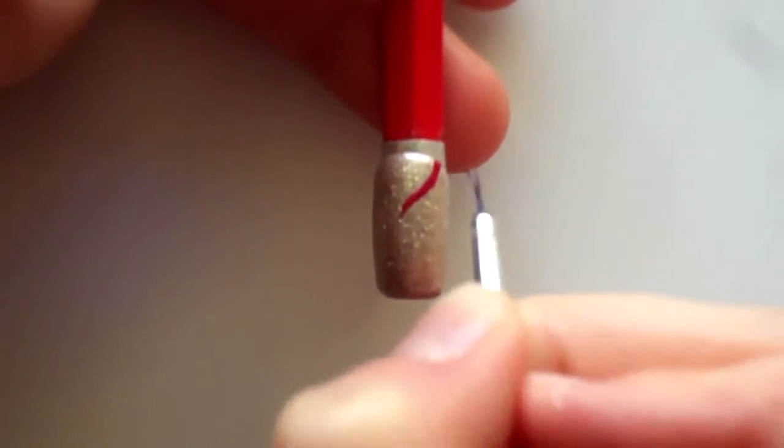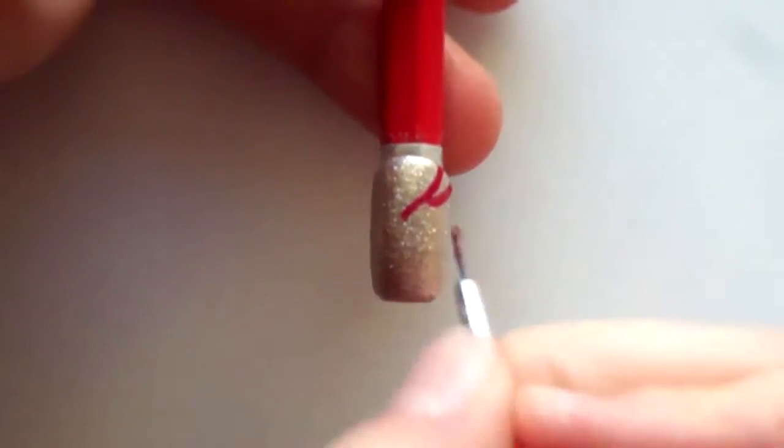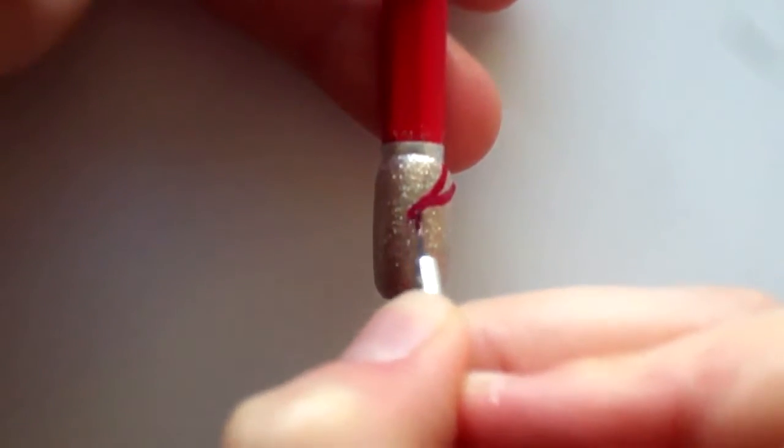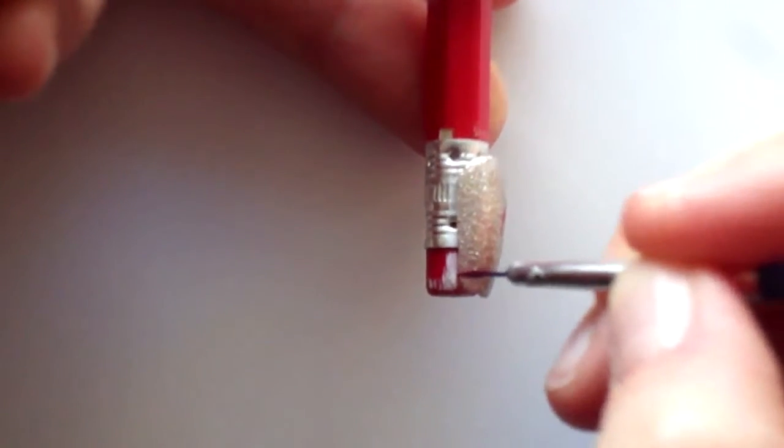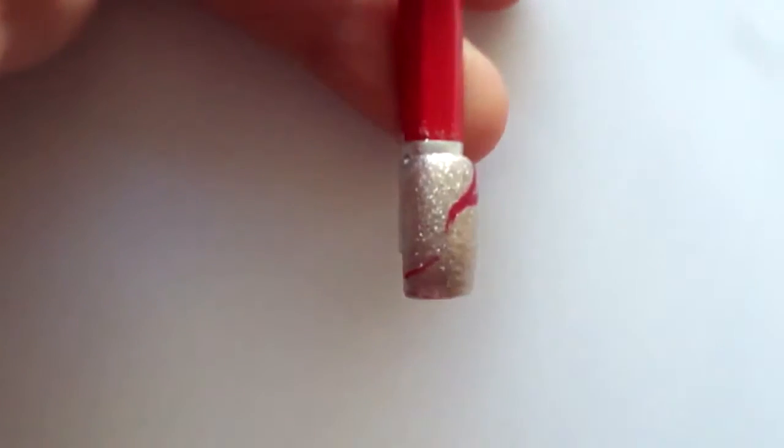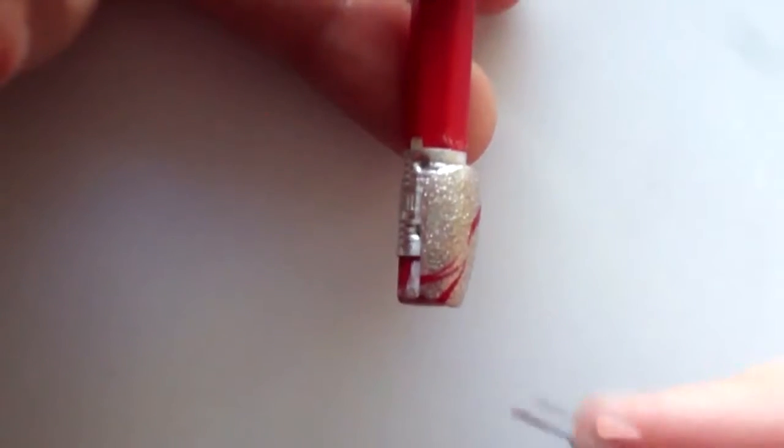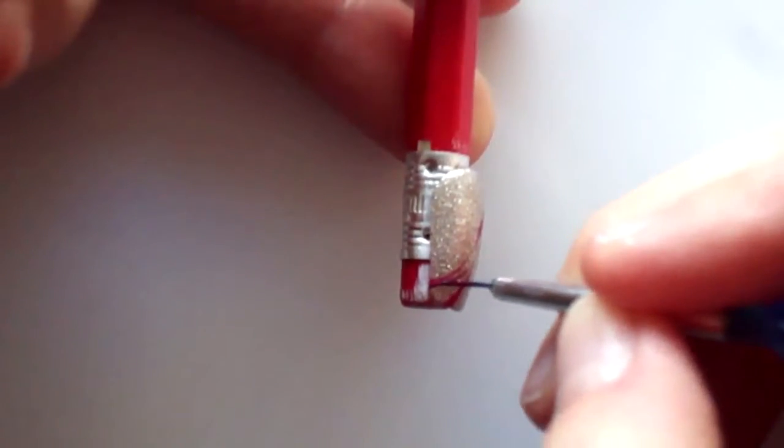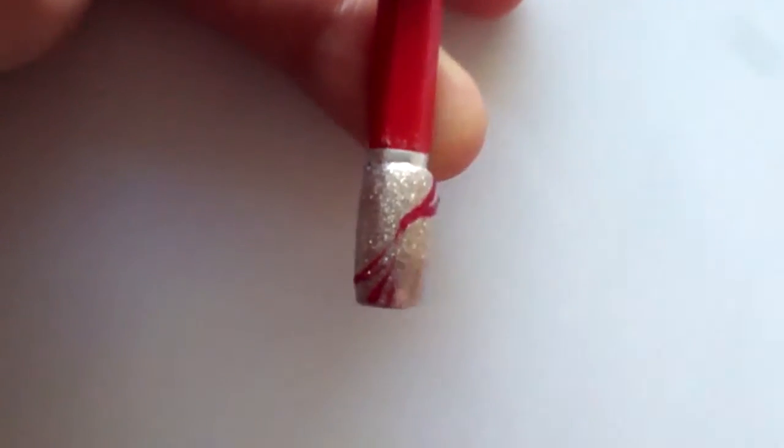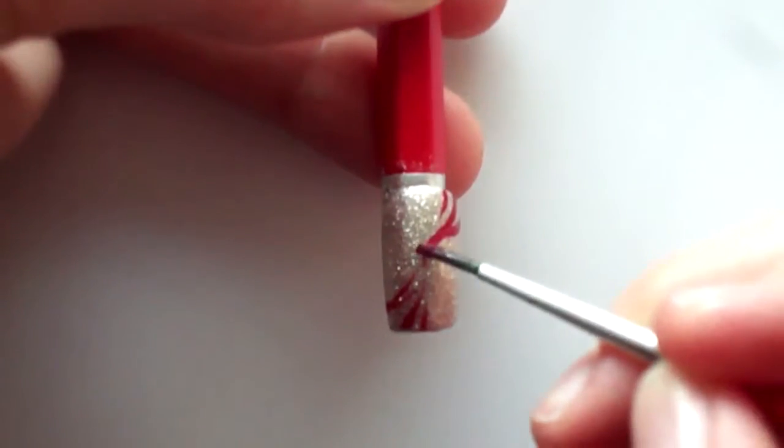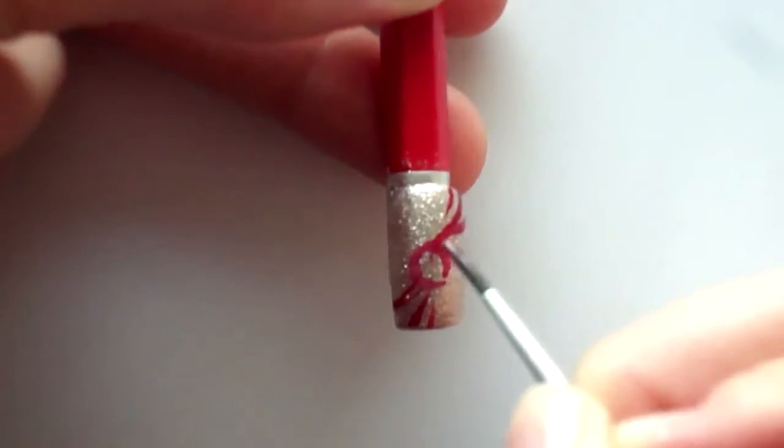On the top right and lower left corners, I'll be painting some stripes going towards the center of the nail with red acrylic paint. Using the same red paint, I'll be painting a red circle in the middle of the nail.